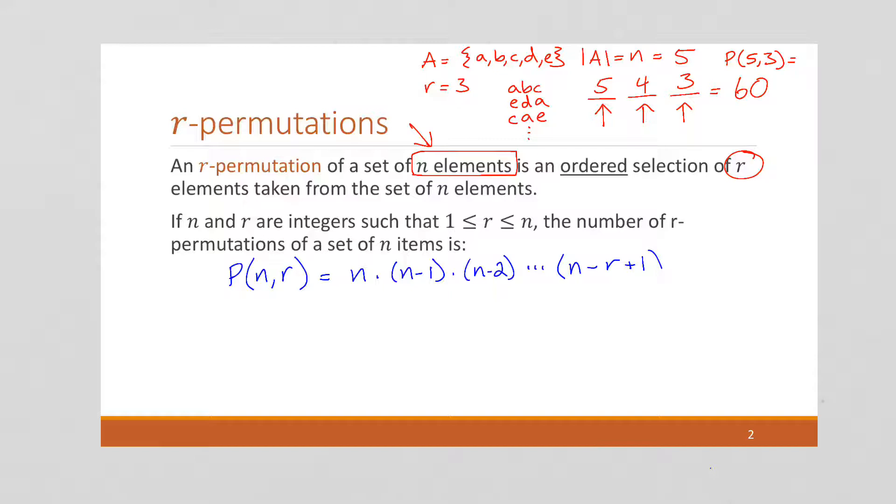So another way to write this is that this number of permutations is going to be n factorial divided by n minus r factorial.